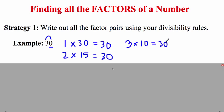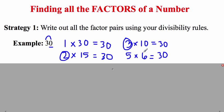Now we can test for divisibility by 4. 30 is not divisible by 4, so we'll move on to 5. 30 is divisible by 5 because it ends in a 0 or a 5, so 5 times 6 is 30. The divisibility rule for 6 is if it's divisible by 2 and 3, it's also divisible by 6 — and we've already covered that. 30 is not divisible by 7, 8, or 9. 30 is divisible by 10 because it ends in a 0, and we've already covered 10 with 3 times 10. So these are our factor pairs using the divisibility rules.